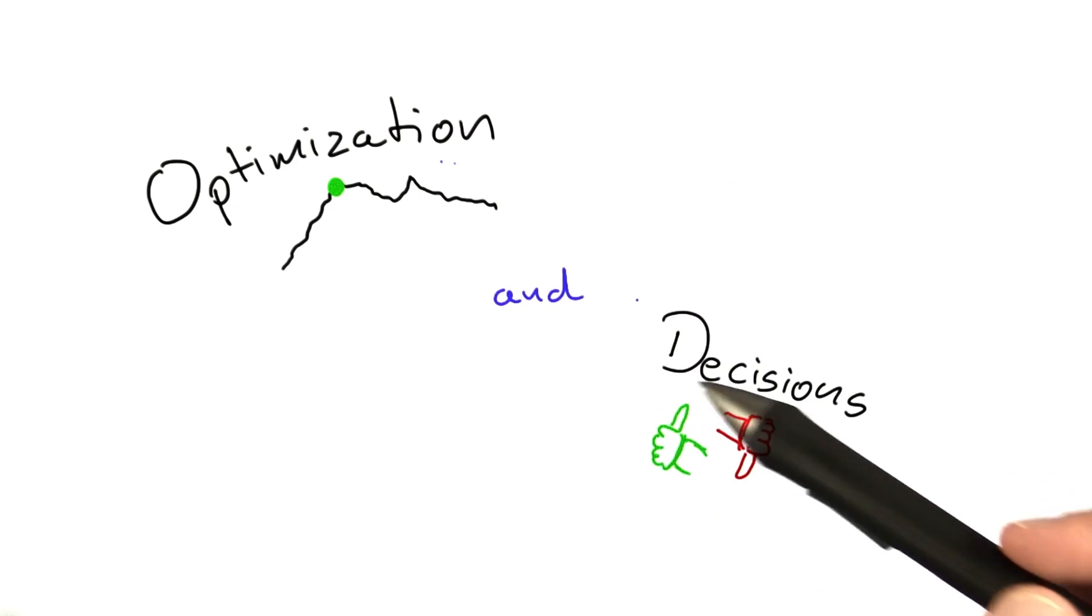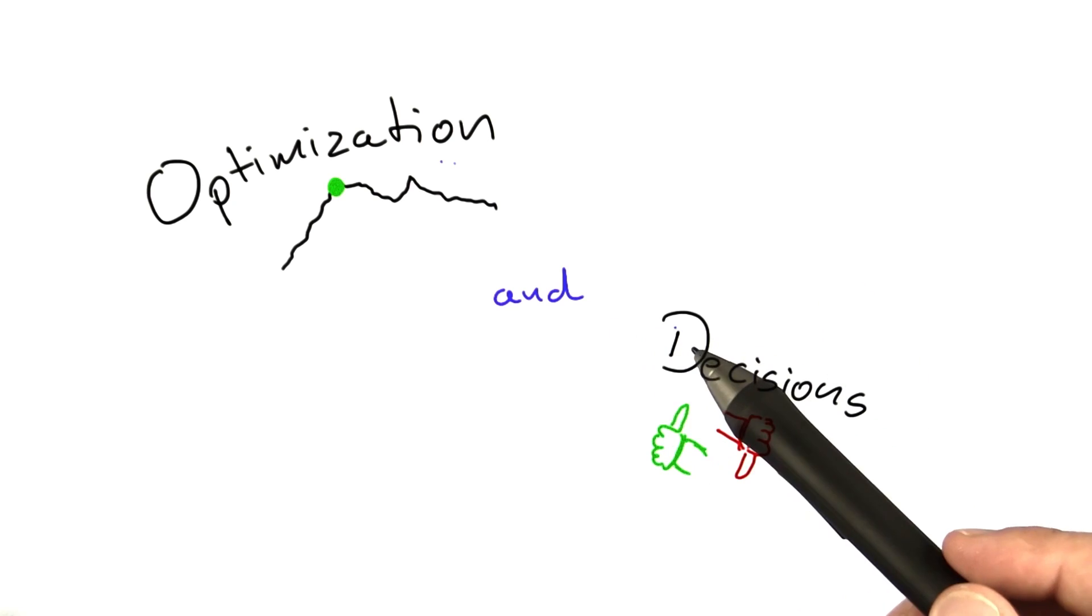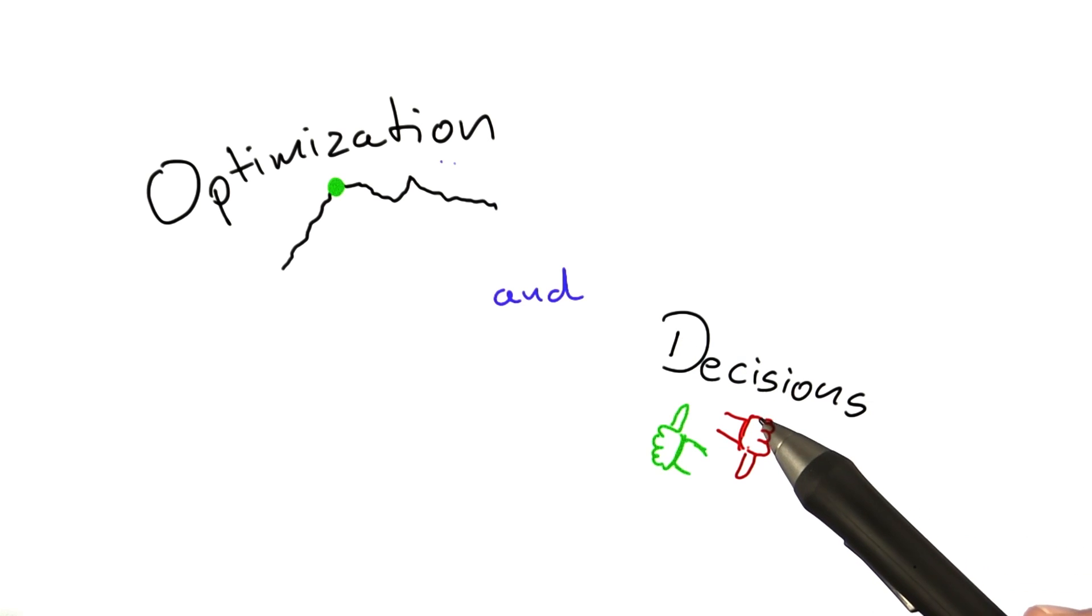In this unit, we're mostly going to work with a slightly different version of these problems called decision problems. So we're not going to ask, for example, what is the smallest possible vertex cover? But rather, we're going to ask, does a graph have a vertex cover that is smaller than some number k? And k is given to us in advance.